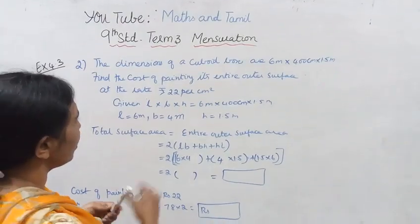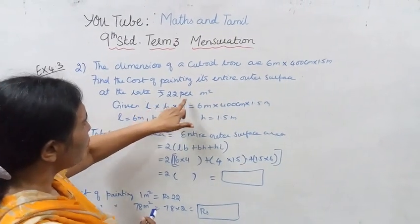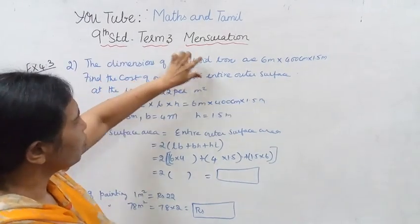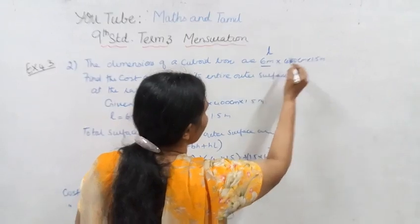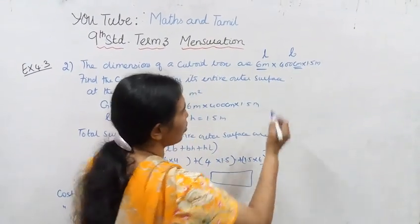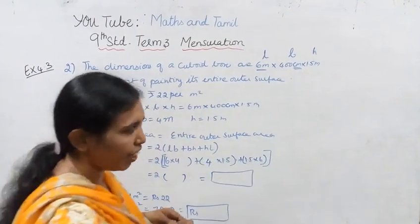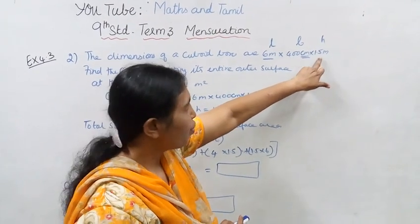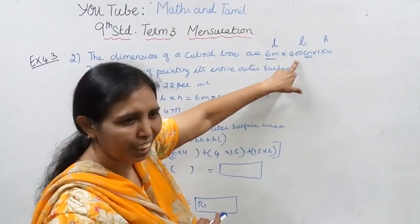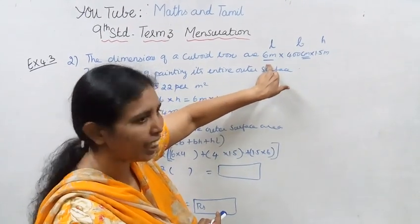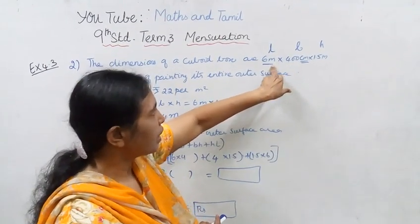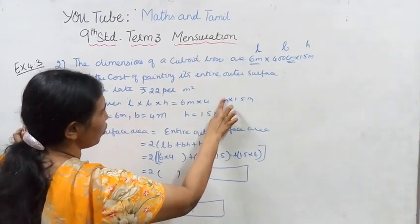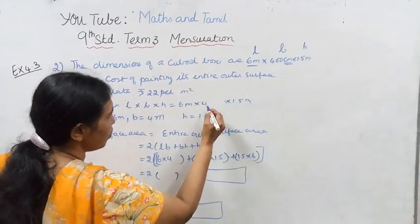Amma namakku nalla governing the dimensions of a cuboid. Here, length is 6 meter, breadth is 400 centimeter, and height is 1.5 meter. Length is 6 meter, breadth is 400 centimeter which is 4 meter, and height is 1.5 meter.